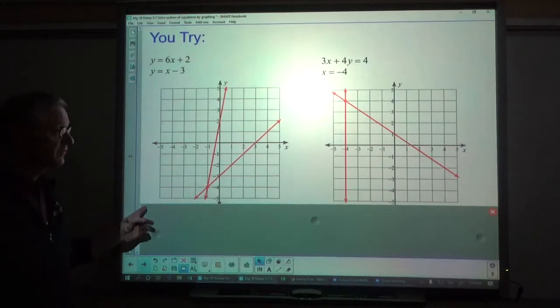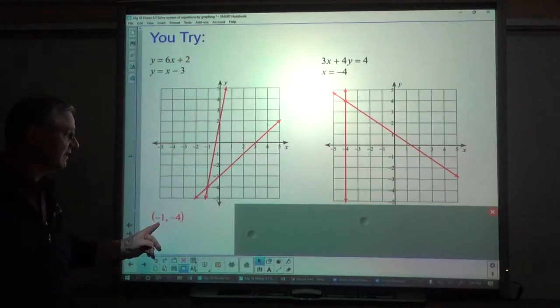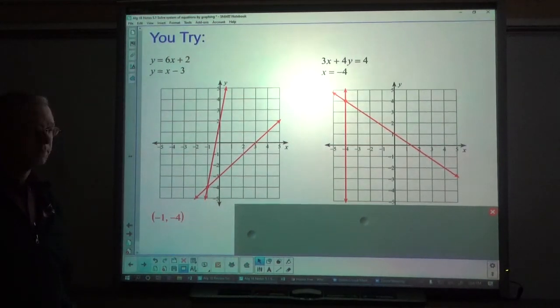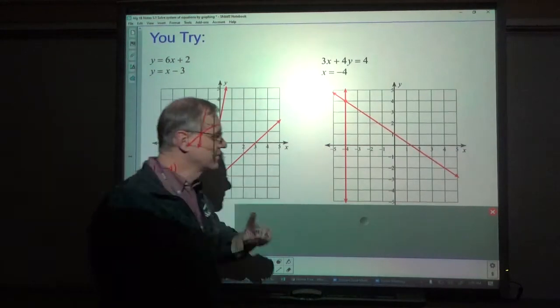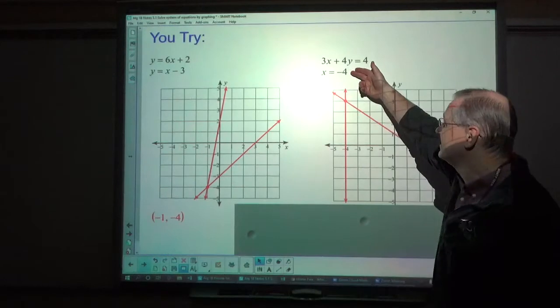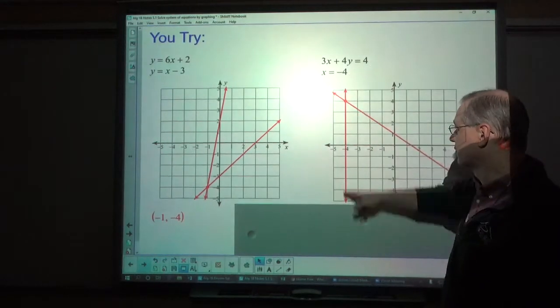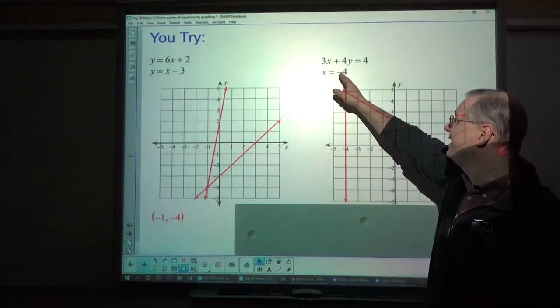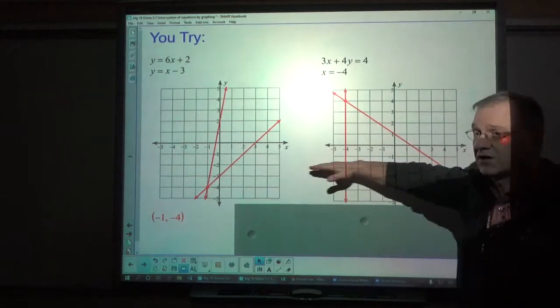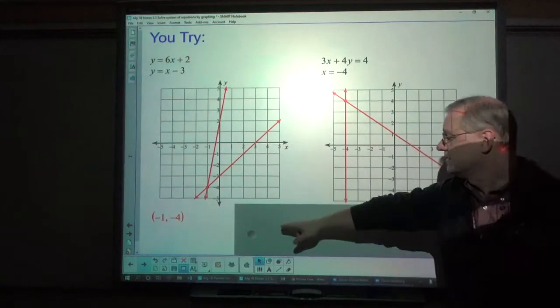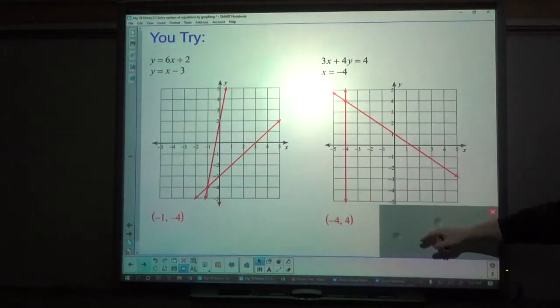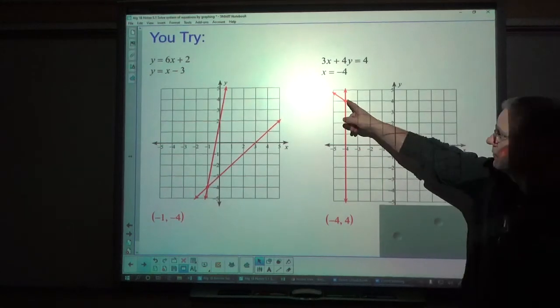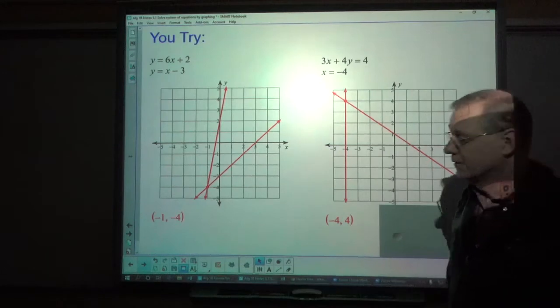Alright. So in this first one, the solution is at negative 1, negative 4. Now what's interesting is when you get x equals a number, that's a vertical line. If it were y equals a number, it's going to be a horizontal line. Well, in this case, that intersection is at negative 4, 4, right up here.